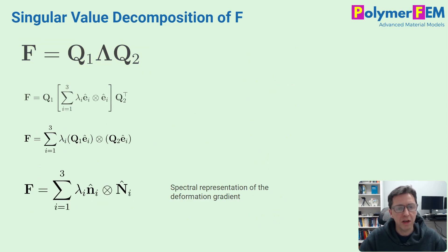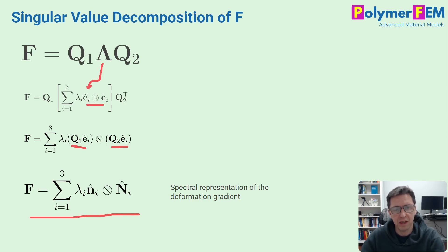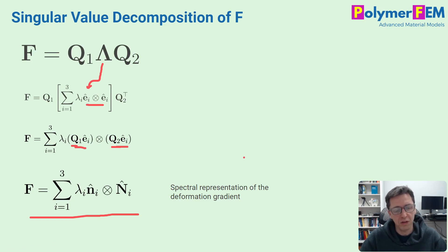Let's do a little more math. The singular value decomposition has pre- and post-multiplication by orthogonal rotation matrices, and we can write the diagonal lambda in summation form with eigenvalues and identity dyadic products. Taking the Q tensors inside the summation, they appear on the left and right of each term. The vector on the left is not the same as the one on the right because Q1 and Q2 are different when F is not symmetrical. This gives us the SVD of F as a sum of singular values times dyadic products of different basis vectors, lowercase n and capital N — an important consequence of how the deformation gradient is defined.